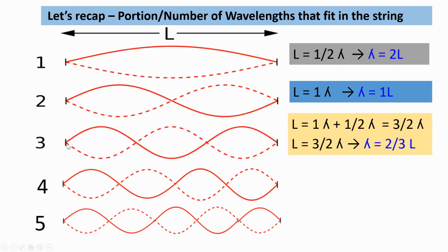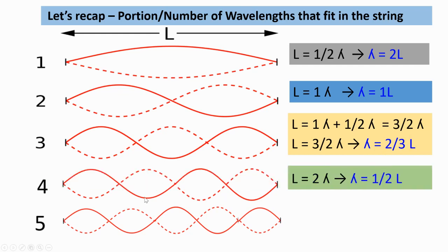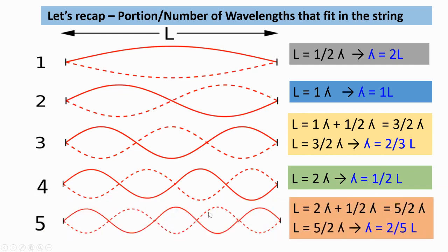For case three, one and a half wavelengths fit in this string, so the wavelength is two thirds of the length. For case four, the length of the string fits two wavelengths, so the wavelength is equal to half of the length. For case five, two and a half wavelengths fit, so the wavelength is two fifths of the length.